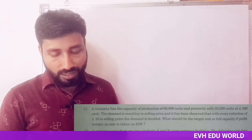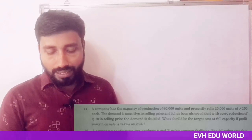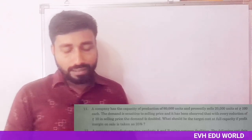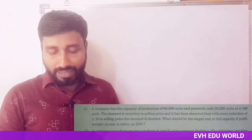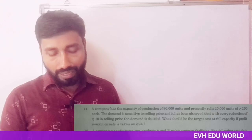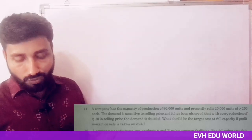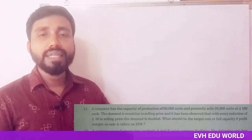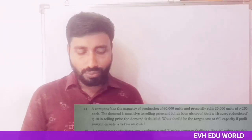Next question: a company has the capacity of production of 80,000 units and presently sells 20,000 units at Rs. 100. The demand is sensitive to selling price, and it has been observed that with every reduction of Rs. 10 in selling price, the demand is doubled. What should be the target cost at full capacity if the profit margin on sale is taken as 25%?